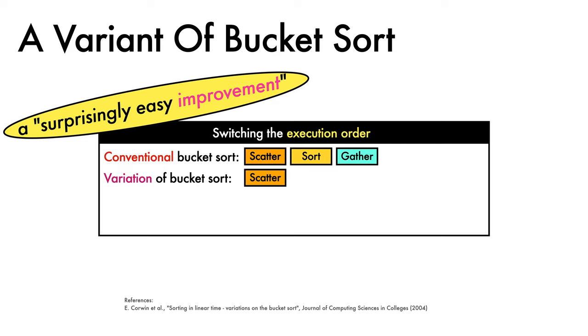In one variation of bucket sort, we instead perform a scatter, then gather back the results, then call insertion sort on the full array.